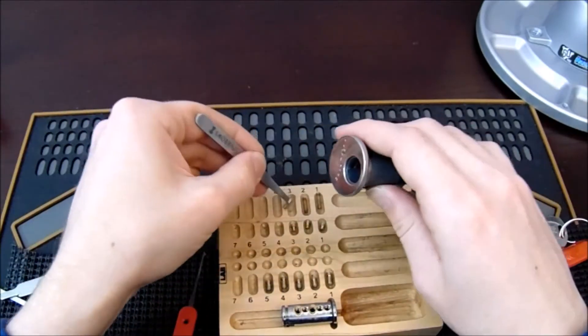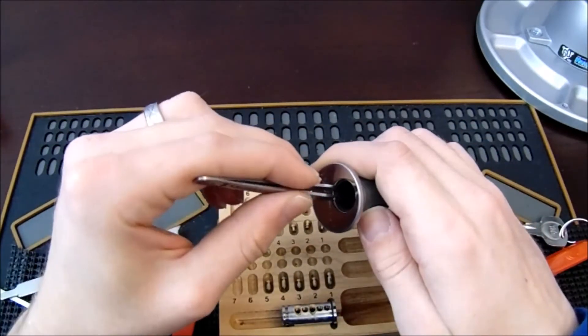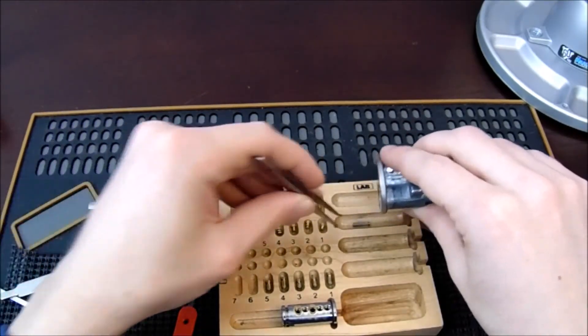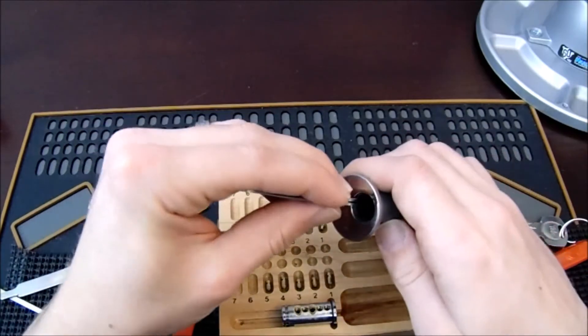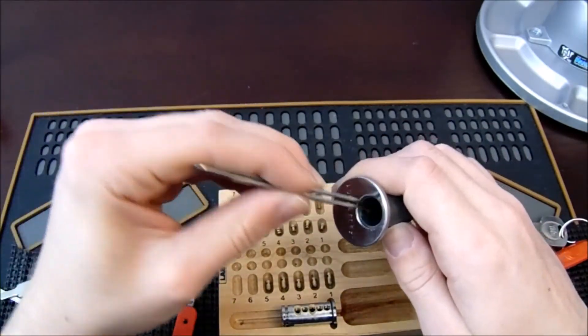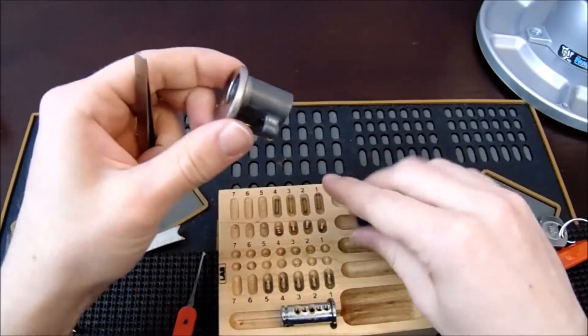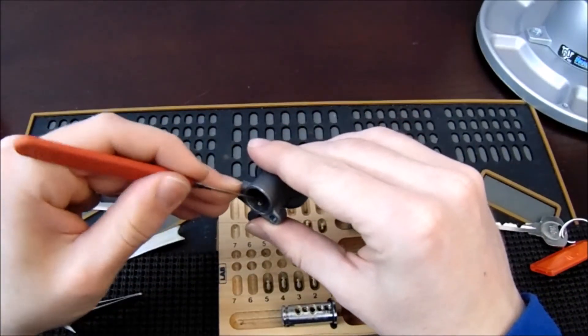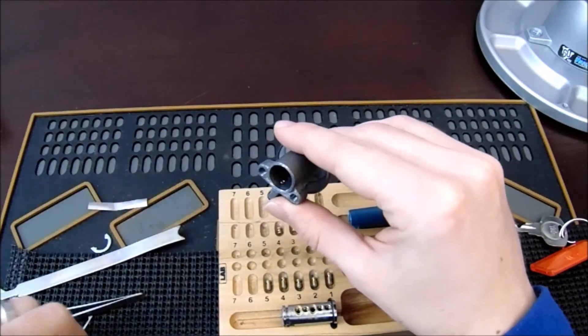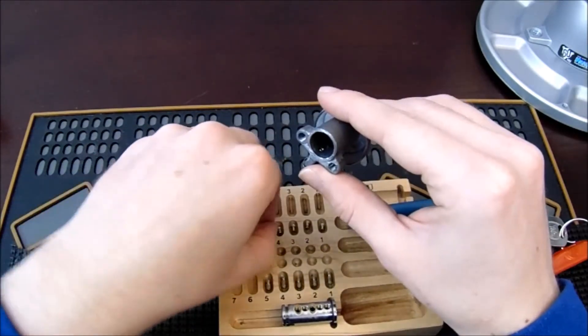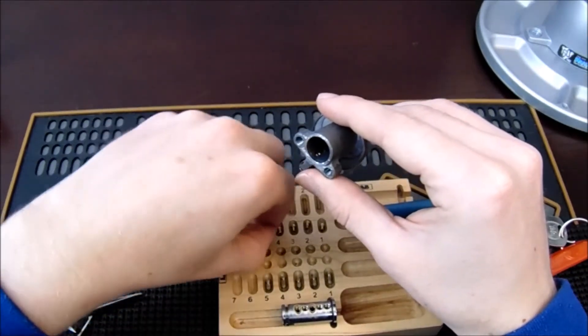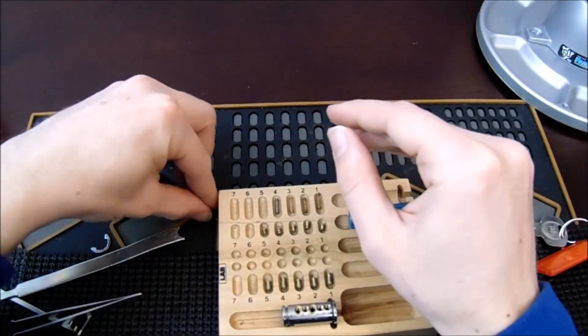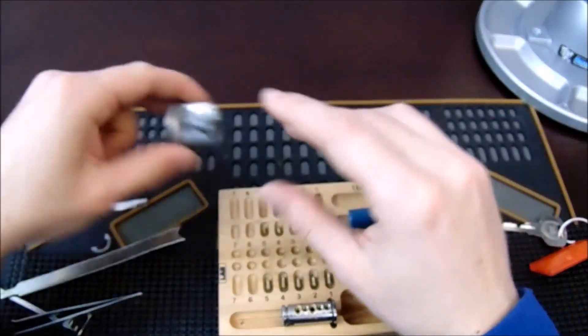In chamber five we have a nice serrated pin. It looks like a steel spring. Sorry, that was four. And in five, serrated pin with a copper spring as well.